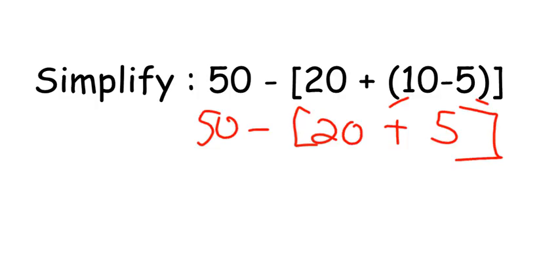50 minus these brackets. So, now we've got to do these brackets. So, 20 plus 5 is 25. And now we're going to take 50 minus that 25 for a final answer of 25. Alright? So, we have that idea.